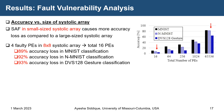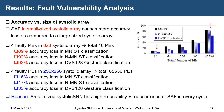We observe that a small-sized systolic array causes more accuracy loss than a large-sized one. For example, with only 4 faulty processing elements in an 8x8 array (16 total PEs), accuracy loss is 89% in MNIST, 92% in NMNIST, and 93% in DVS gesture. But in a 256x256 array with 65,536 PEs, only 4 faulty elements cause 16% accuracy loss in MNIST, 17% in NMNIST, and 33% in DVS gesture. The reason is that a small-sized systolic SNN must be reused more times than larger ones, increasing the reoccurrence of circuit faults in every cycle.